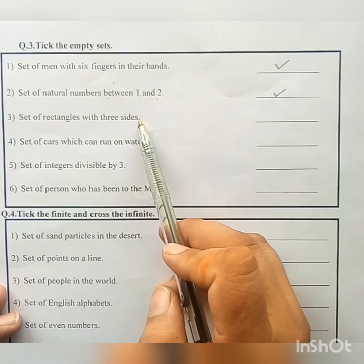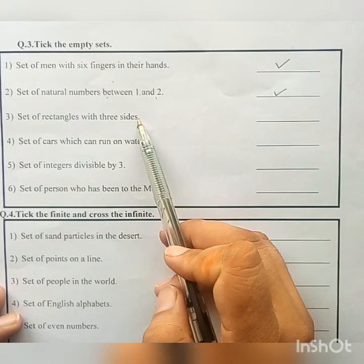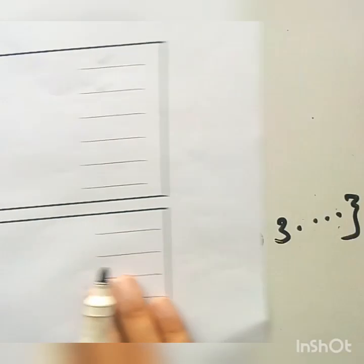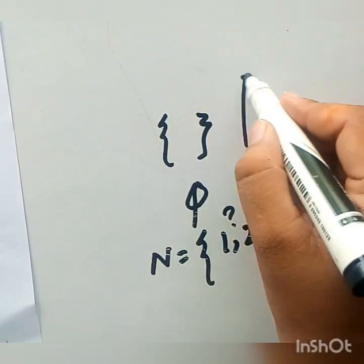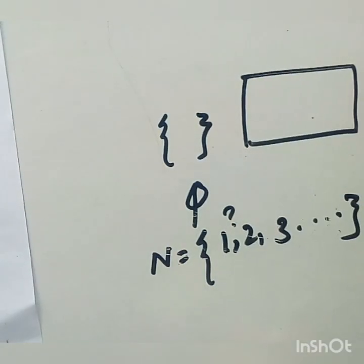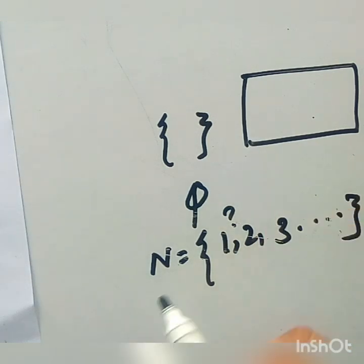Set of rectangles with 3 sides. So students, what is rectangle? First of all, rectangle is 4 sided closed figure. So none of the rectangle have 3 sides.